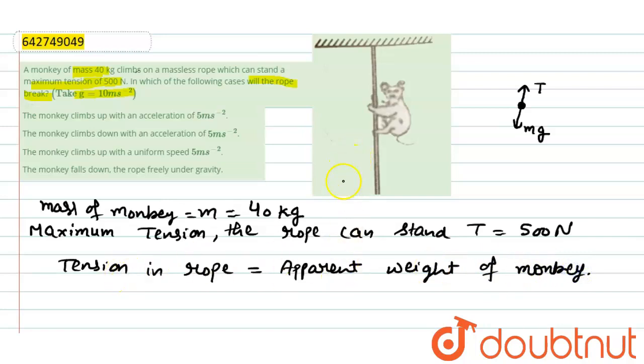Tension in the rope equals apparent weight of monkey. Apparent weight is R. In different cases, it is different.